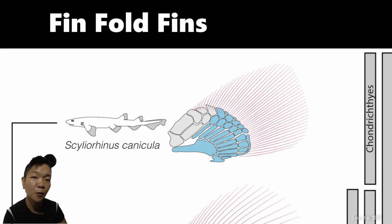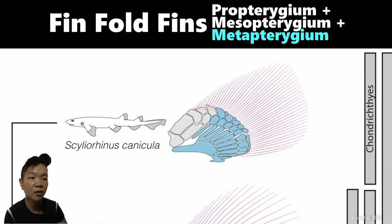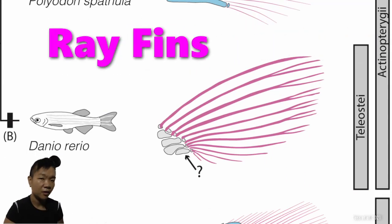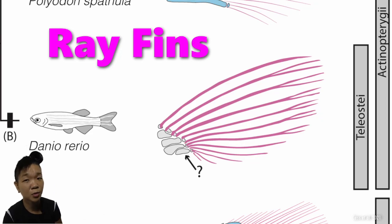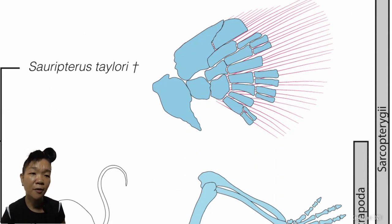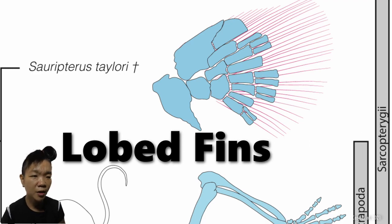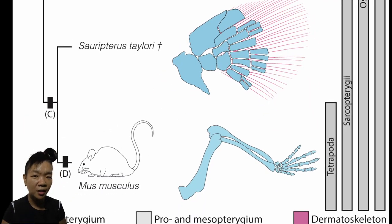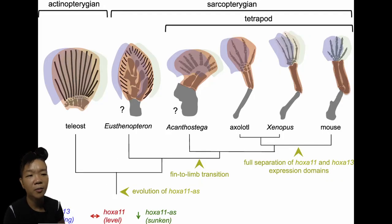Paired fins can be broadly classified based on the arrangement of their parts, corresponding to the three major fish groups. Chondrichthyes have fin-fold fins, broad at the base, with three prominent basal bones. Actinopterygians have ray fins — their basals are practically gone and their fins are perhaps the most flexible of the three. Sarcopterygians have lobed fins, consisting of a fleshy paddle-shaped portion bearing the fin and associated muscles, and fin rays at the tips of these lobes. This is the lineage from which all tetrapods evolved, with their fins becoming pivotal in the evolution of limbs.